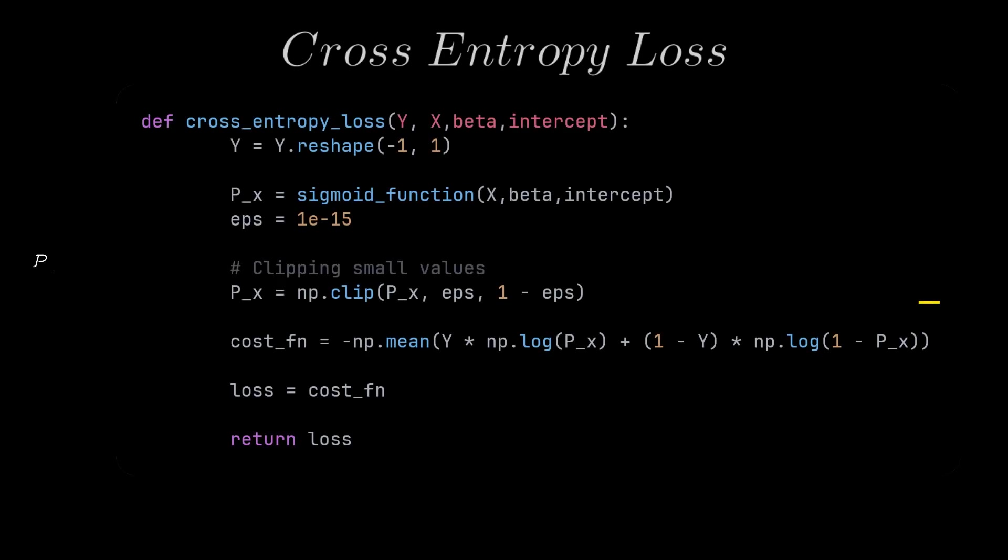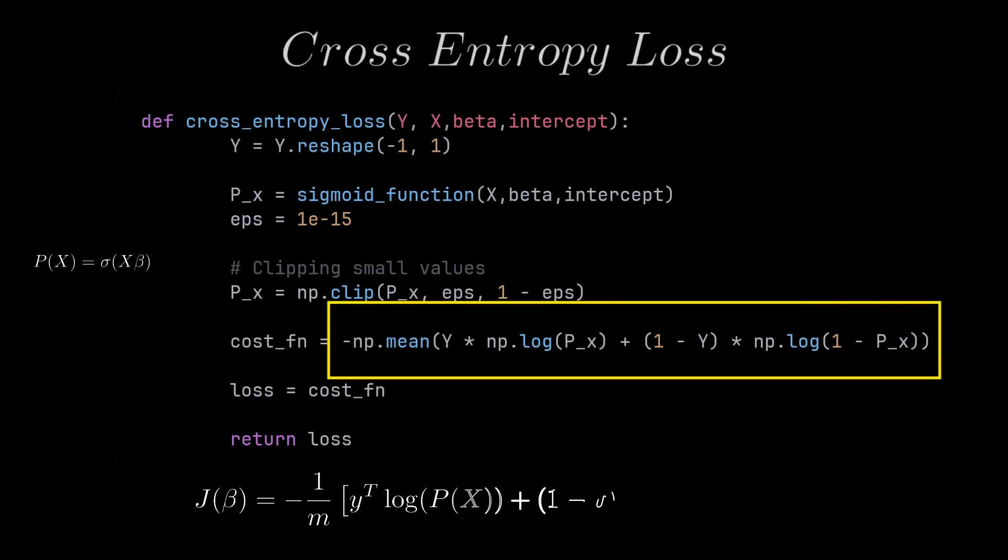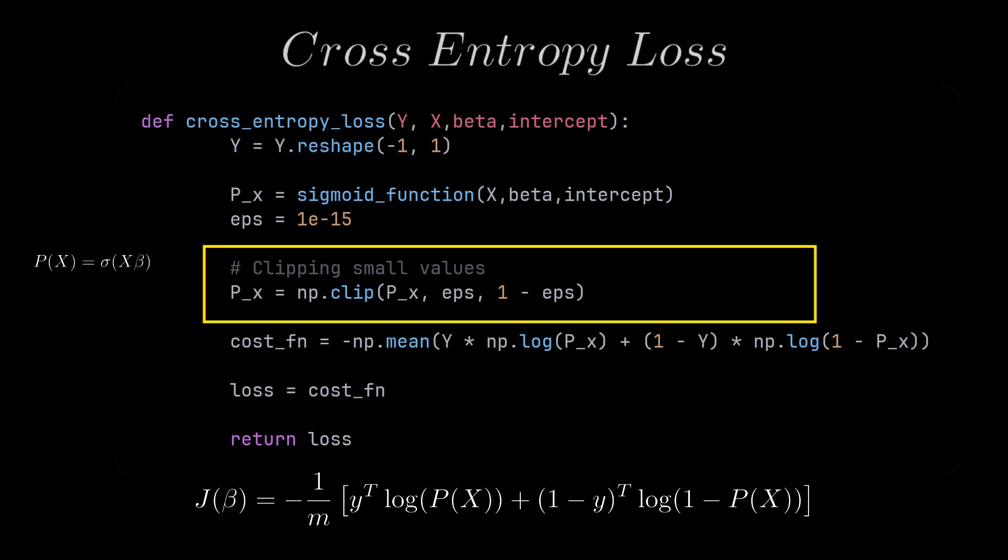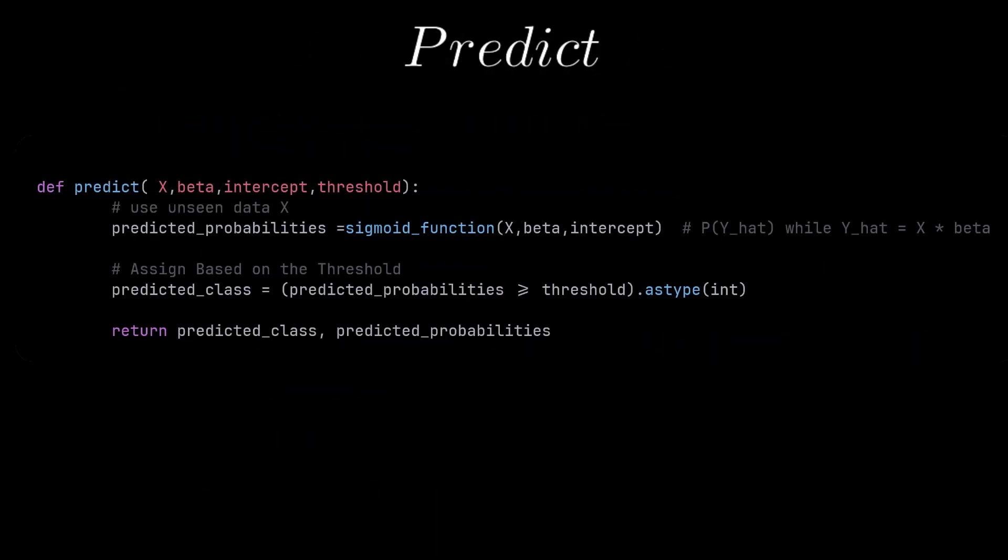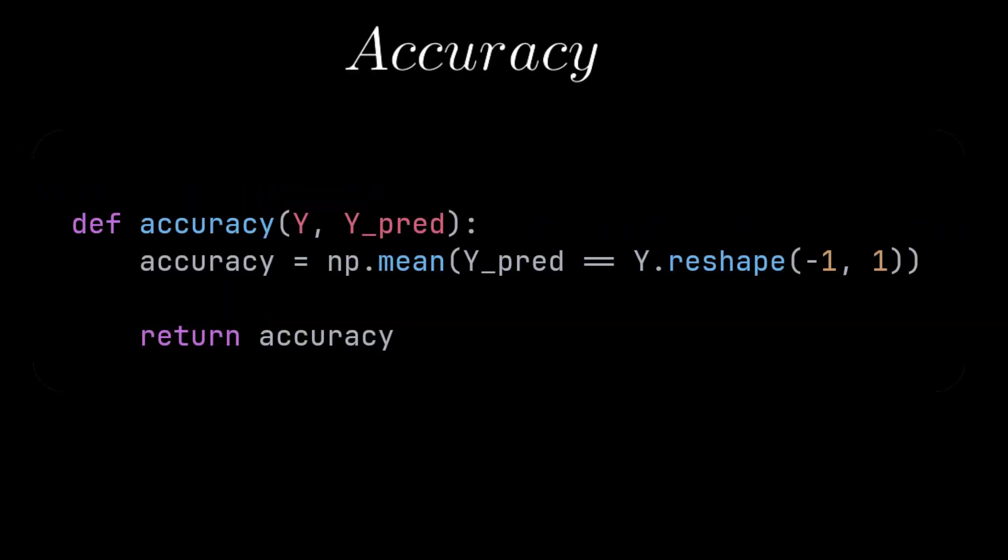The function simply returns the calculated loss from the formula we derived earlier, which is the cost function, clipping small probabilities for numerical stability. And then we finish it off. This is the predict function, which calculates the probability of new unseen data and assigns it to the new class based on a threshold that we can control. And the accuracy function simply compares the predicted values with the true values and gives the average of how correct we are and how accurate the predictions were.